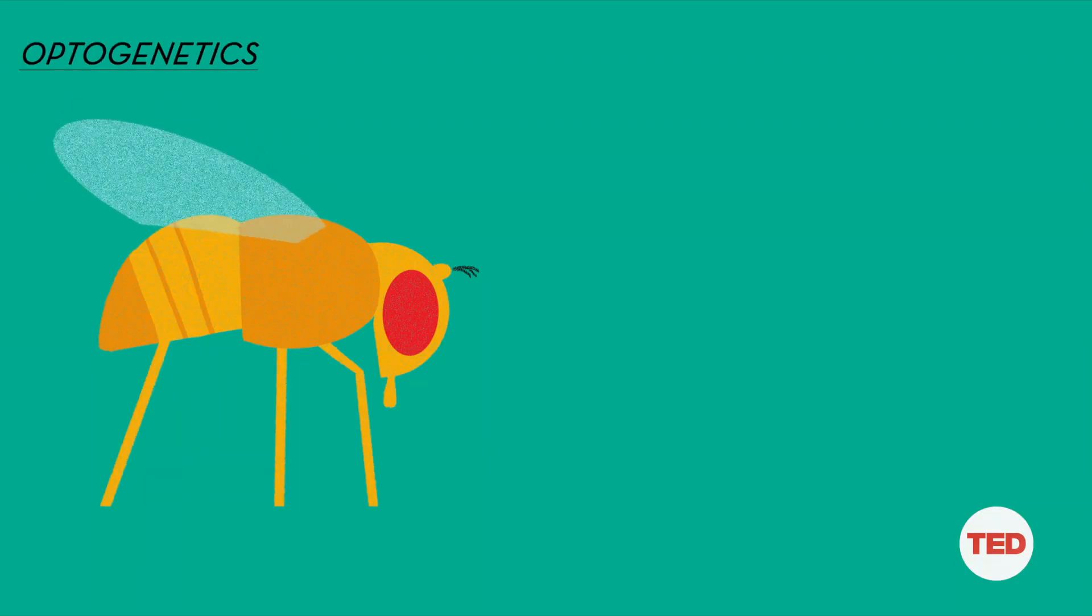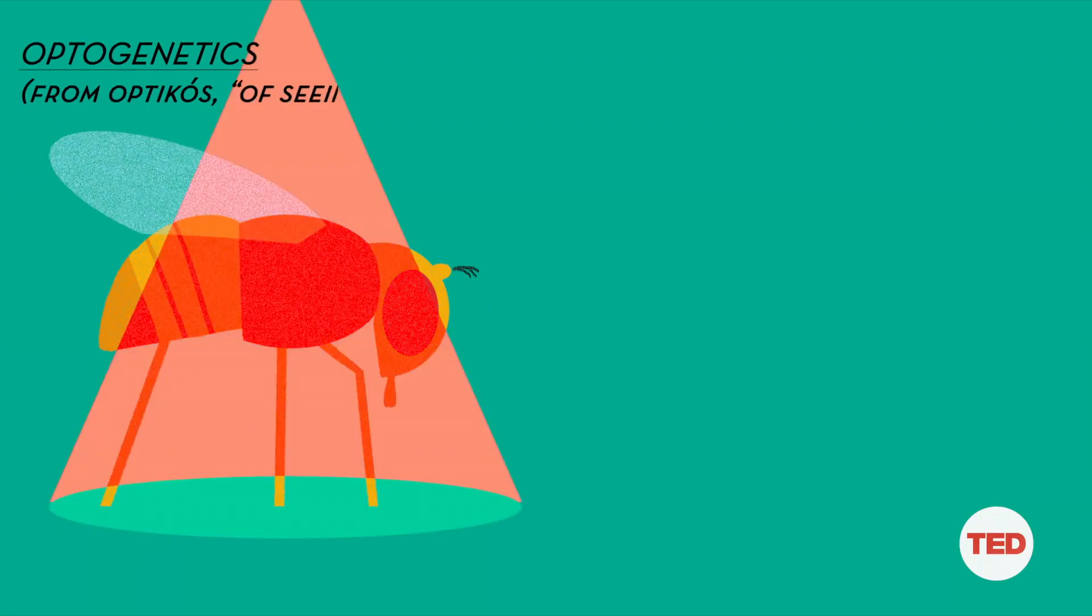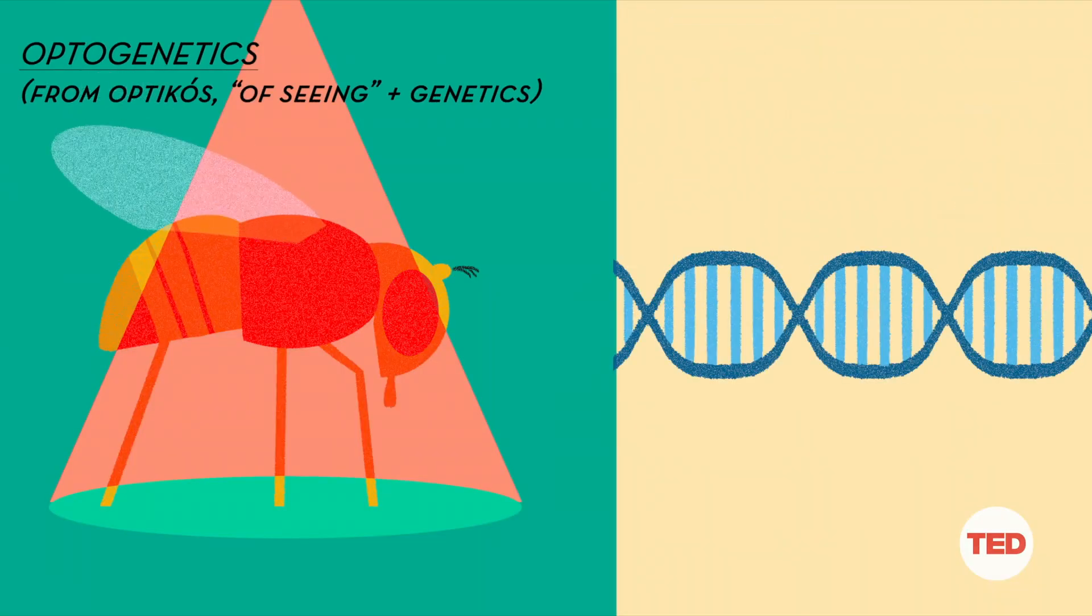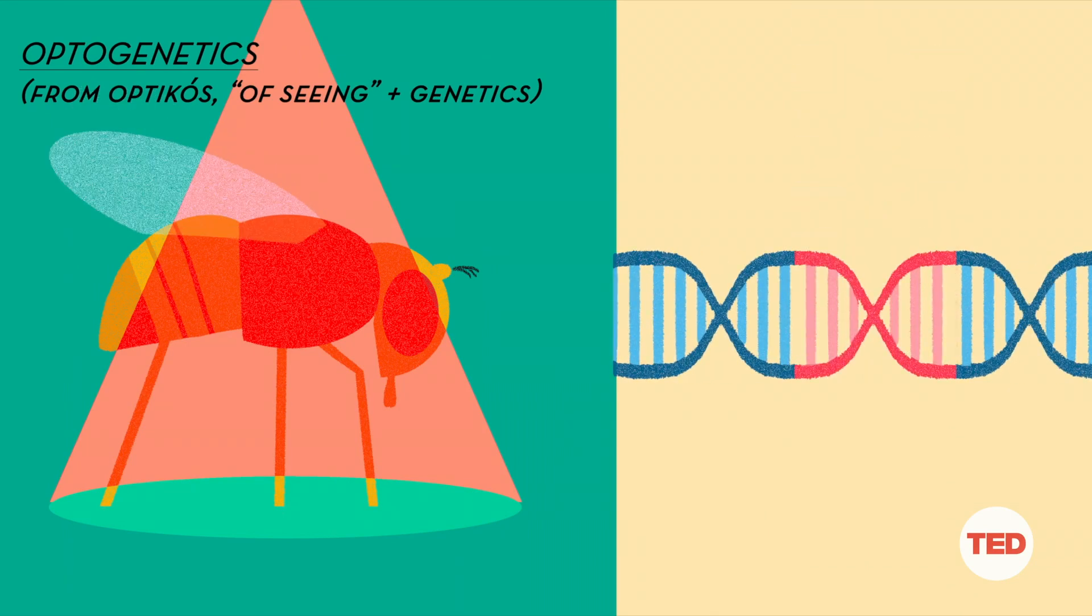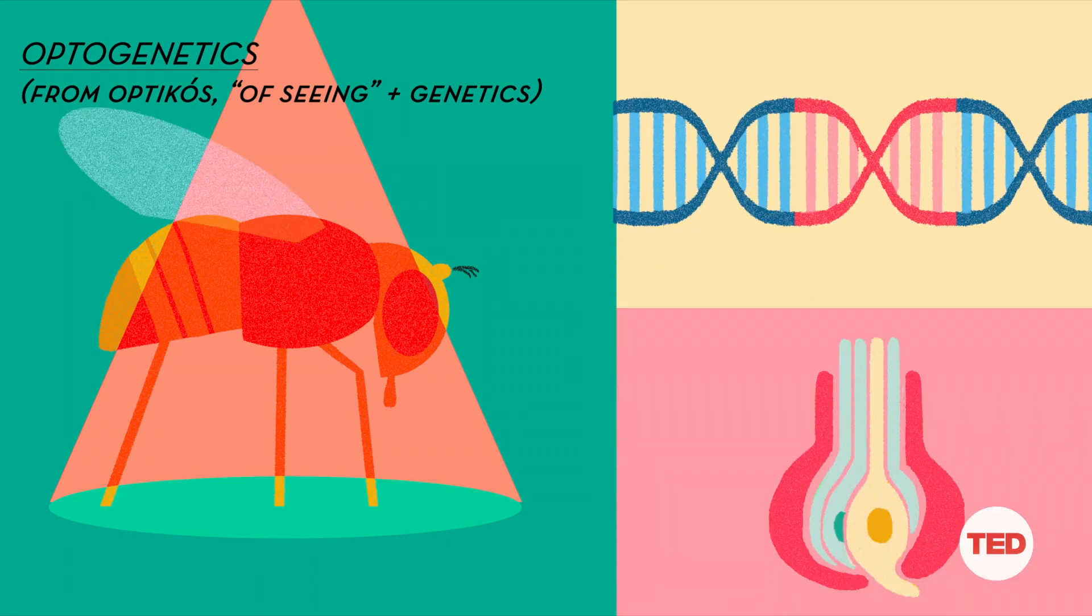Enter optogenetics. This is the revolutionary new tool that's taking neuroscience by storm. And in this case, opto means light. And genetic refers to the fact that these fruit flies have been modified to contain a special gene that makes only certain neurons respond to light. In our case, we've added this special gene to the sweet taste receptors.